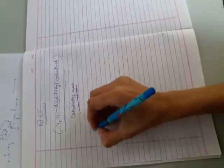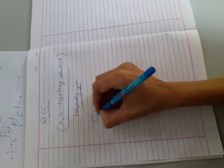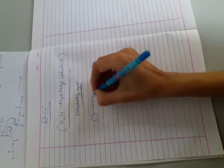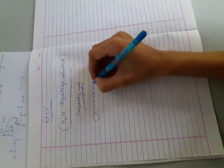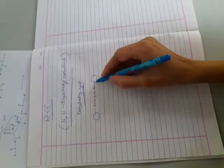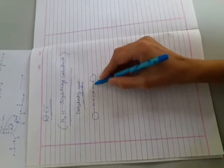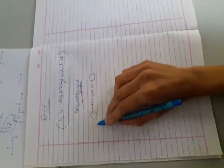The structure of DCC is, it has two benzyl rings attached to nitrogen. C double bond N, same here also.